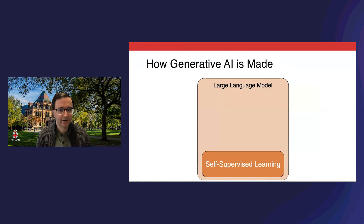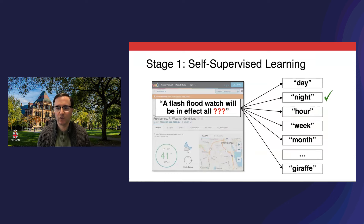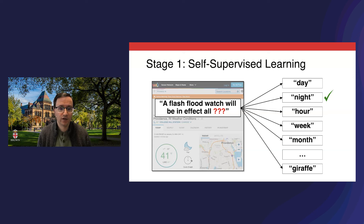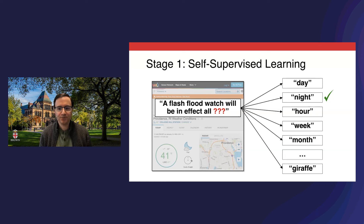The first stage is self-supervised learning. This is what people traditionally think of when we use the term language modeling. It involves getting lots of unannotated or raw data and learning to predict missing pieces of it — the pieces aren't really missing, we're just hiding them from the model. In the case of language modeling, this can take the form of predicting the next word in a sentence. In this example, we have text from a weather website; the model predicts the next word and learns something about language and the domain of weather. The words on the right represent a ranked list of predictions, ranging from likely answers like 'day' or 'night' to less plausible ones like 'month.' This process is called self-supervision because there is a specific right answer — in this case, 'night' — we're just hiding it from the model.